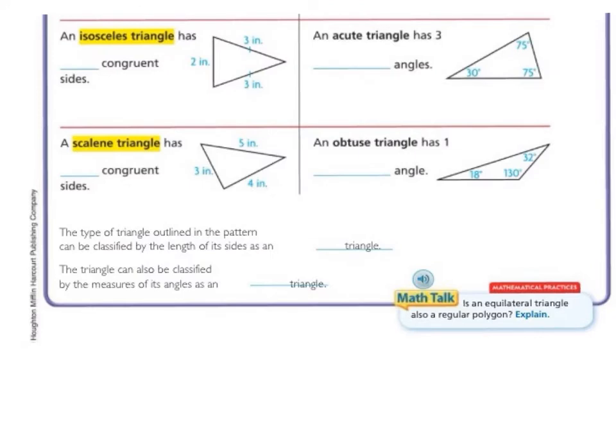Moving on to the rest of page 445, an isosceles triangle has blank congruent sides. So let's count how many sides are equal in this triangle. So congruent means equal. We have one 3-inch side and another 3-inch side and then a 2-inch side. So we have two sides that are congruent. So an isosceles triangle has two congruent sides.